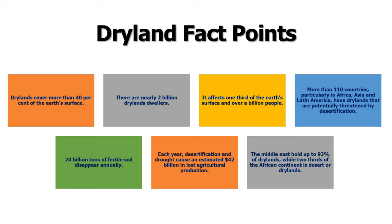24 billion tons of fertile soil disappear annually. Each year, desertification and drought cause an estimated 42 billion dollar loss in agricultural production. The Middle East holds up to 93% of the dry lands, while two-thirds of the African continent is desert or dry land. These were some key facts about dry lands.